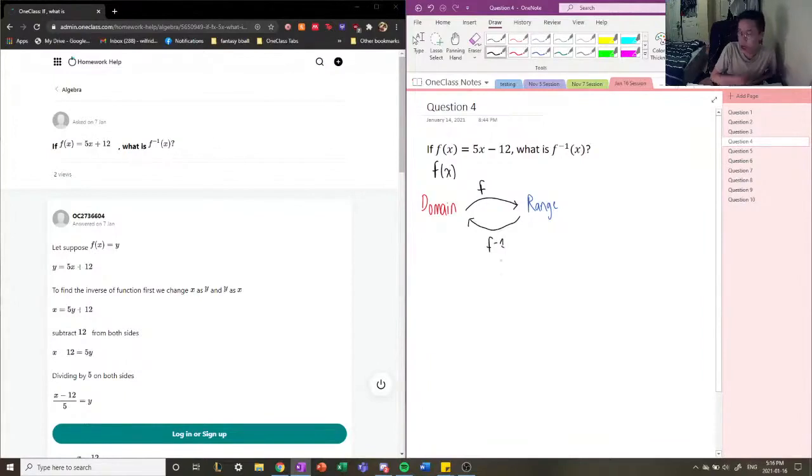So it's like a reverse mechanic, right? So it basically returns the range back to its domain.